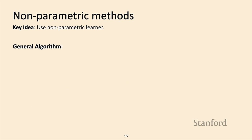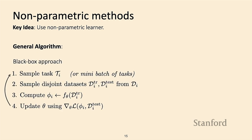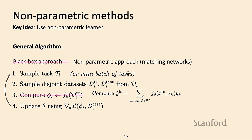Walking through the algorithm more formally: it's similar to black box and optimization-based approaches. What differs is primarily the third step — instead of explicitly computing task parameters, we skip that step and directly make predictions for test examples. This can be viewed as integrating out the task parameters, which is why we call these non-parametric few-shot learning methods.